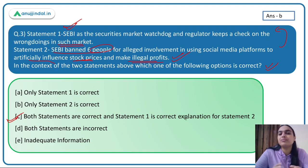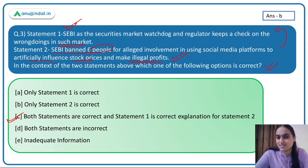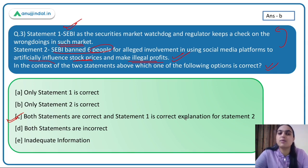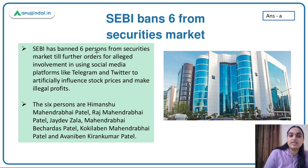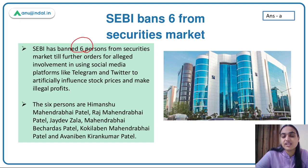This is based on an actual recent case. Six people were banned from dealing in the securities market because they were illegally influencing stock prices and making illicit profits using social media platforms such as Twitter and Telegram.